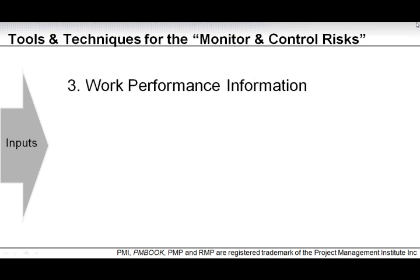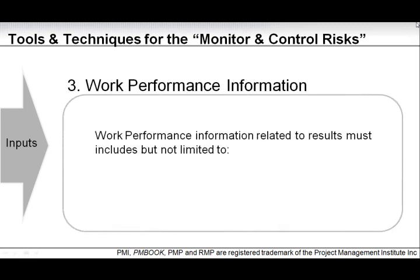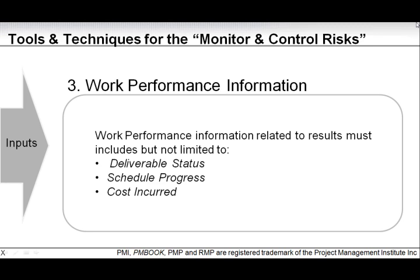Work performance information relates to results, including but not limited to deliverable status, schedule progress, and cost incurred. This is all performance measurements which make up the work performance information that you need in order to drive your monitor and control process.